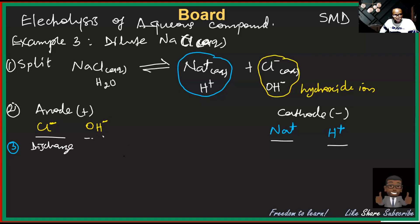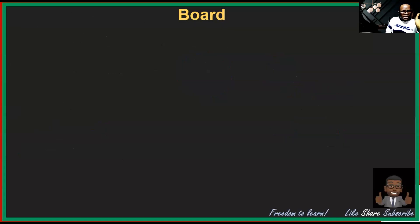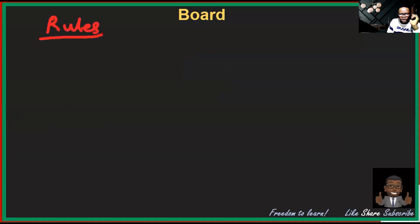That brings us to the rules that guide the discharge of ions. We have rules that govern which ion gets discharged. Let's look at those rules. For positive ions, the order is similar to the reactivity series.